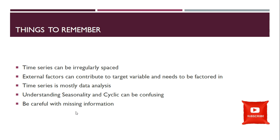A few more things to remember: time series can be irregularly spaced — it doesn't have to be perfectly regular. There are different ways of handling irregular data which I'll explain in detail later. There can also be a lot of missing data — for instance, your sensor may go down while collecting data. We'll see how to handle missing data; typically you cannot use a global mean or global median, you need to do smart imputation of the missing values.